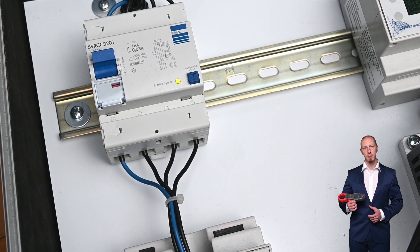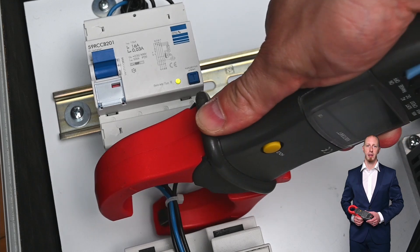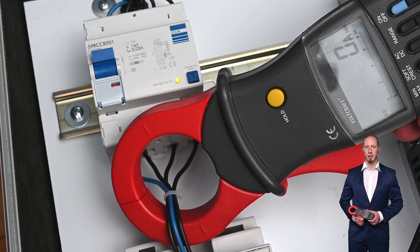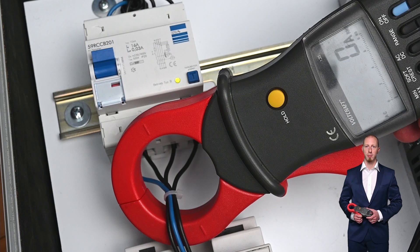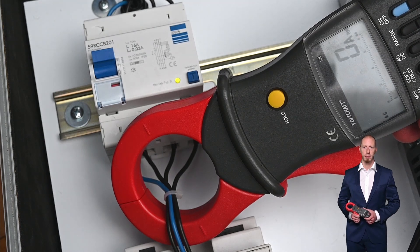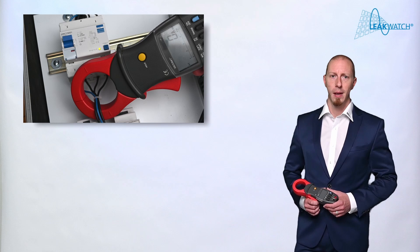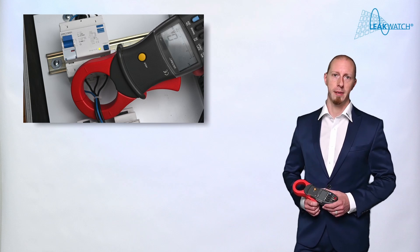Many people know how to measure the leakage current in the residual current measuring method. You take a clamp amp meter or a leakage clamp and lead the phases and the neutral conductor, in short, the outer conductors through, and you can read the leakage current on the display. Right? Yes and no. In principle, the type of measurement is correct.